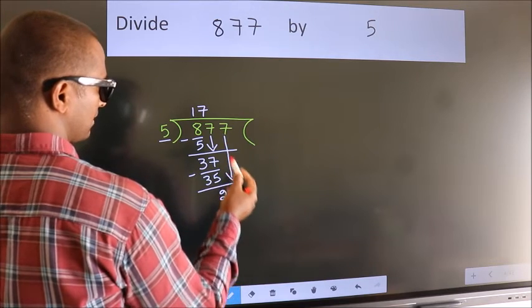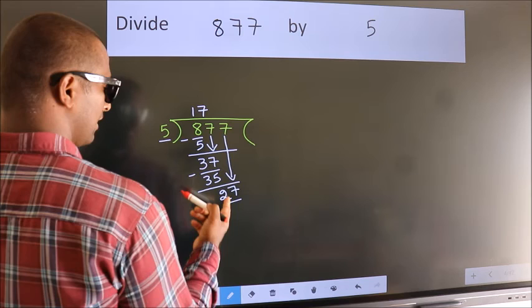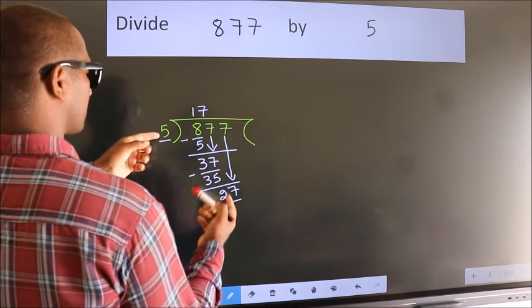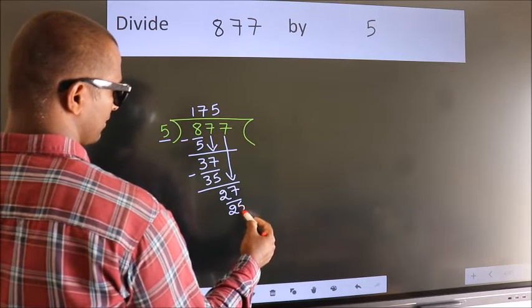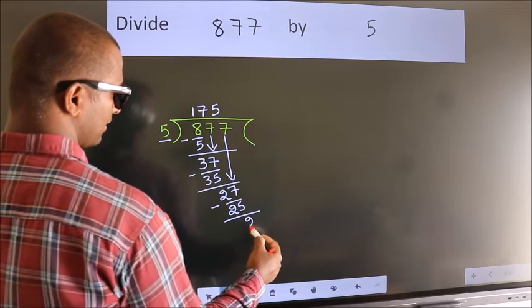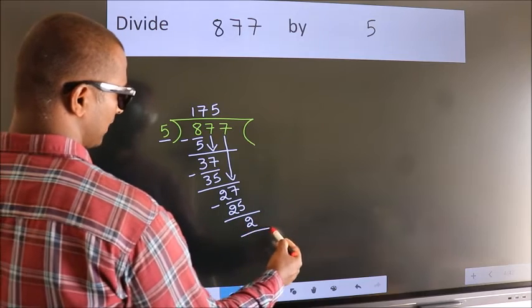Bring down the next number, so 7 down. So 27. A number close to 27 in the 5 table is 5 times 5 equals 25. Now we subtract and get 2. No more numbers to bring down, so we stop here.